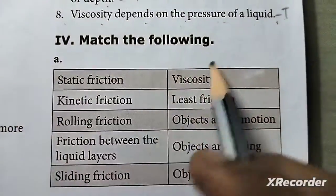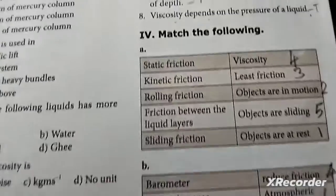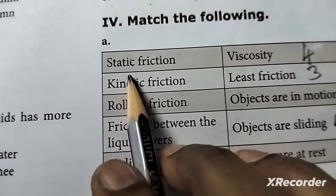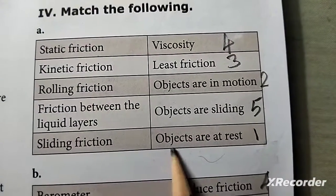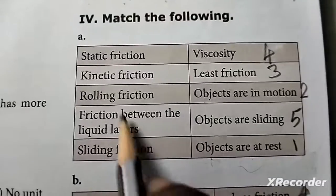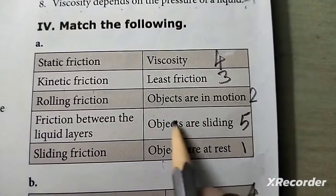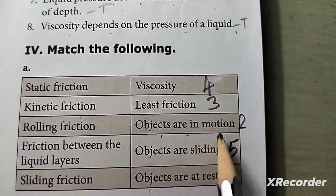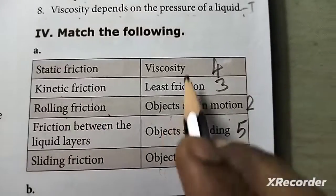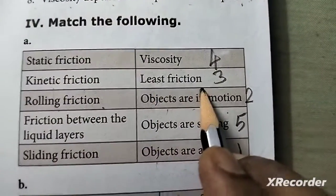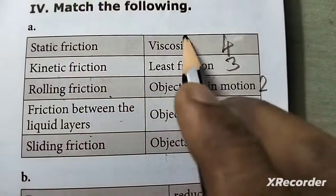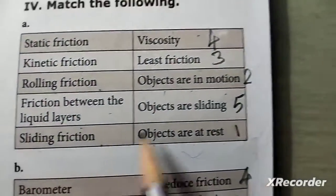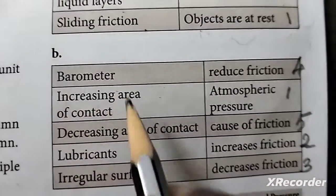Section four: Match the following. Static friction — objects are at rest. Kinetic friction — objects are in motion. Rolling friction — least friction. Viscosity — friction between liquid layers. Sliding friction — objects are sliding.